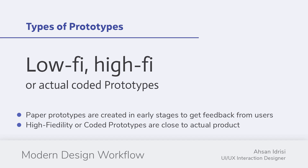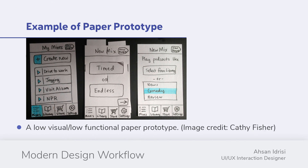Paper prototypes are created in early stages to get feedback from users. I'm not going to go into depth on these because this course focuses on web design, not user experience. Here is an example of a paper prototype — a visual image from Kathy Fisher — a very low fidelity functional paper prototype. The user taps or selects a menu item and you manually show them the next screen, so all animation and interactivity is manual.